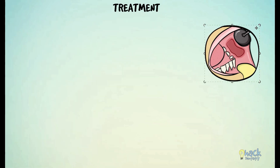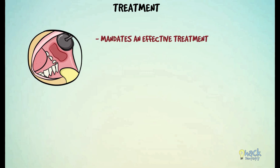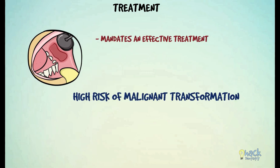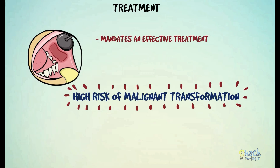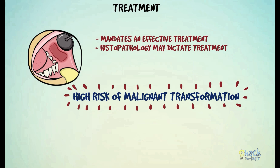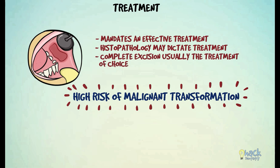Erythroplakia mandates effective treatment since it has a high risk of malignant transformation. Usually, the histopathology of Erythroplakia may dictate the treatment. Since most lesions show dysplasia or invasive carcinoma, a complete excision is usually the treatment of choice, and patients should be kept under close follow-up.